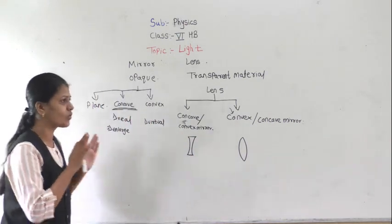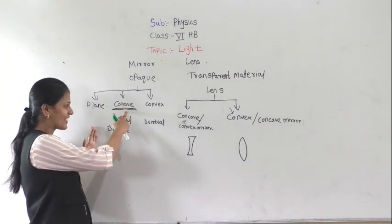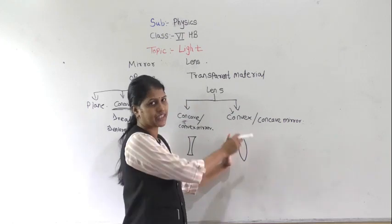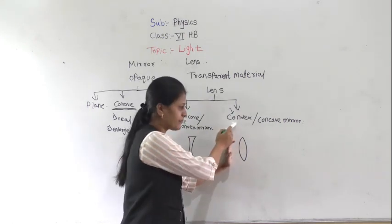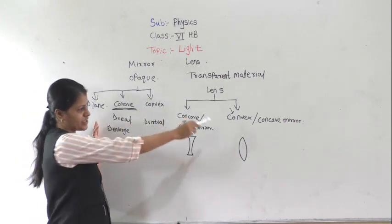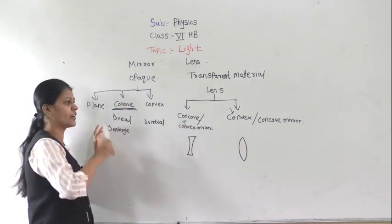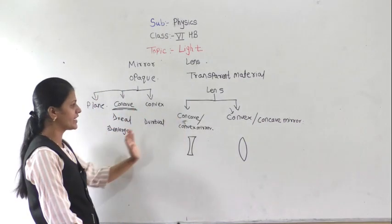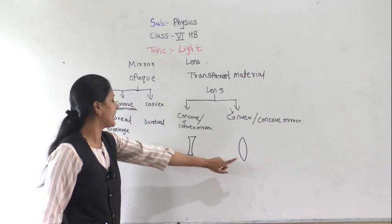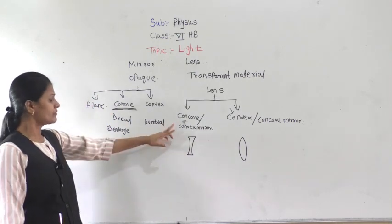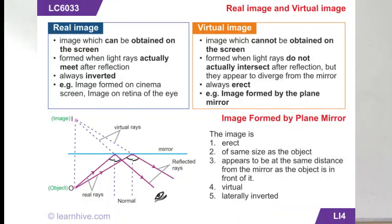Now the characteristics: what are the characteristics of the concave mirror? The image you get is real and enlarged, and the same characteristics will be found in the convex lens — you will get a real and enlarged image. For the concave lens, you will get a virtual image. What is a virtual and real image we have already discussed in the last two videos.